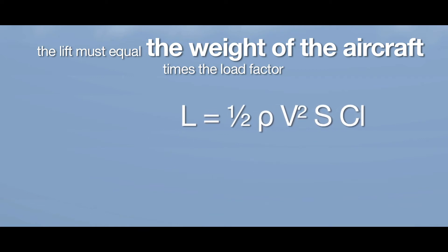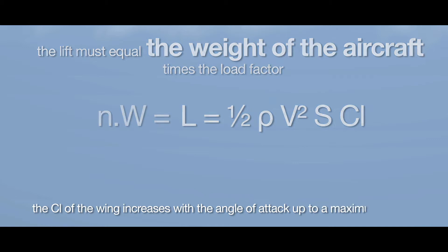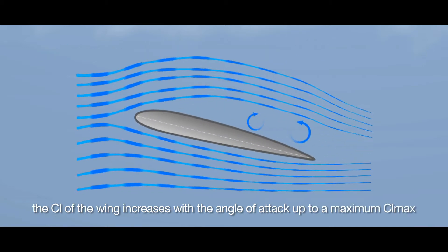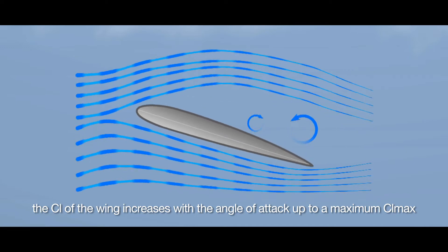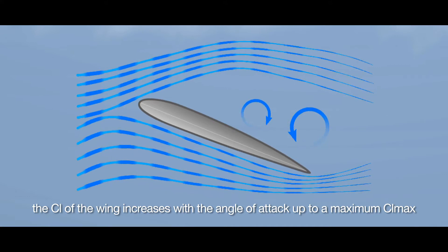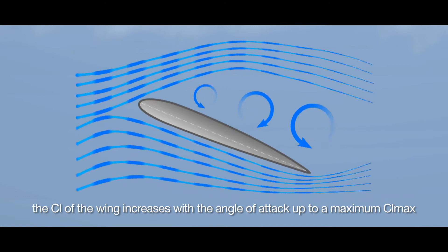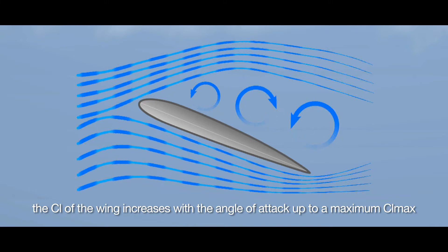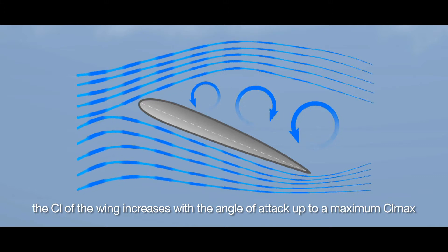The general lift equation becomes: N times W equals L equals a half rho V squared S CL. The CL of the wing increases with the angle of attack, up to a maximum CL max. Any further increase of angle of attack above the angle of attack of CL max will make it impossible for the airflow to smoothly follow the upper wing surface. The flow will separate from the surface, causing the CL to decrease and drag to increase.